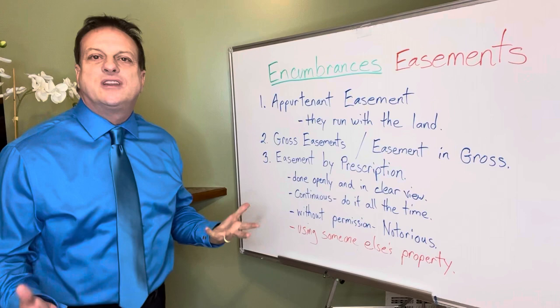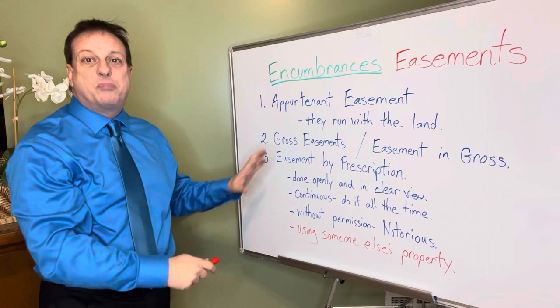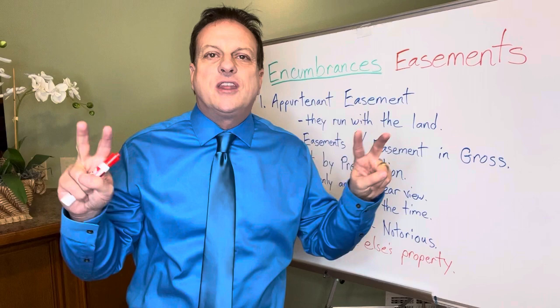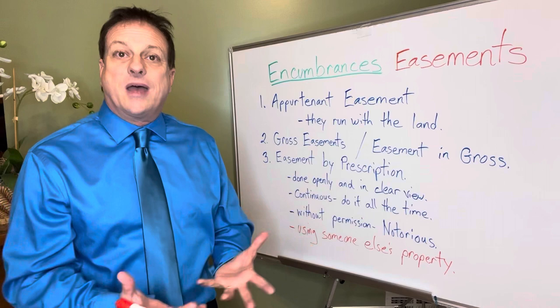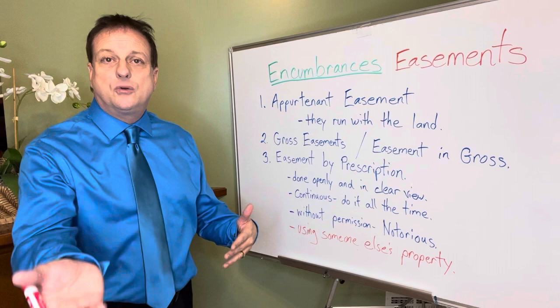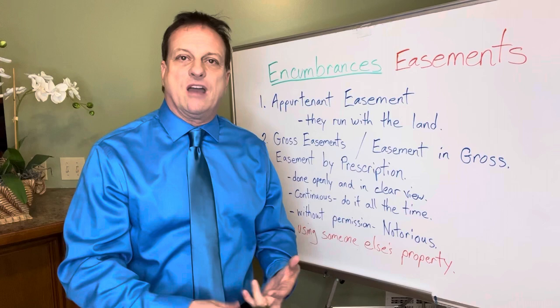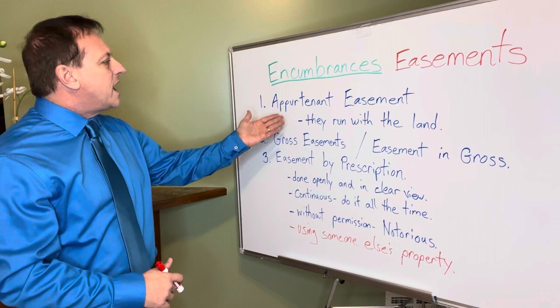I've got a great video on appurtenances — you need to watch that because there are test questions about it. An appurtenance is something that runs with the land. It's an improvement, right, or easement that is attached to the property. As the property sells, appurtenances automatically transfer with the land — things like mineral rights, water rights, and improvements such as a shed or the house itself. An appurtenant easement is therefore something that runs with the land.